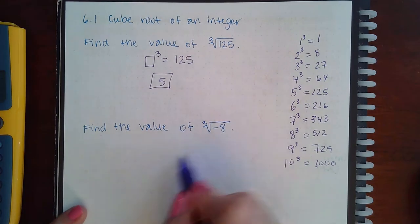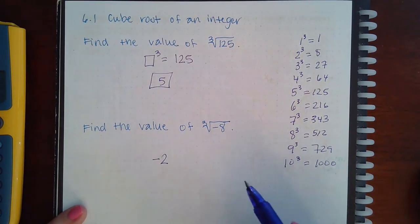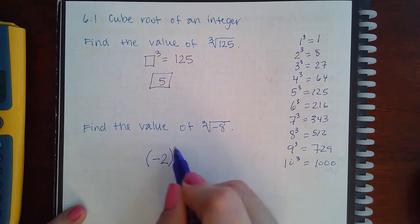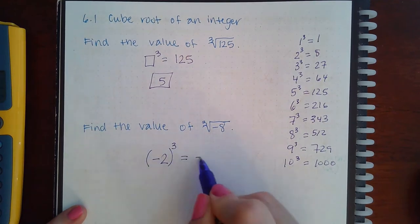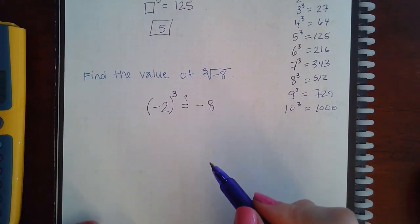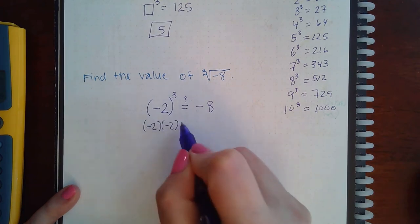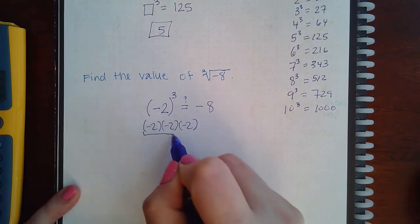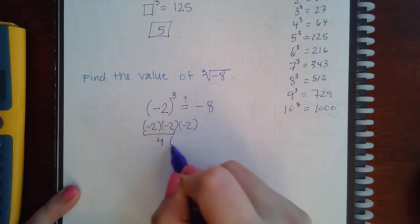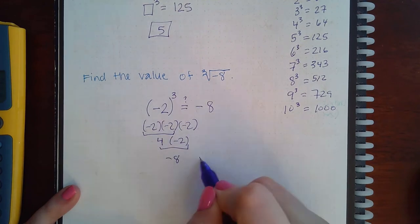And so, I know that 2 cubed will give me 8. Let's see what happens if I throw a negative in there. So here's the question: Does negative 2 cubed equal negative 8? That's what I want to know. Because if so, then the answer is just going to be negative 2. What is negative 2 times negative 2 times negative 2? This is a positive 4 times the leftover negative 2, which does in fact give us negative 8.